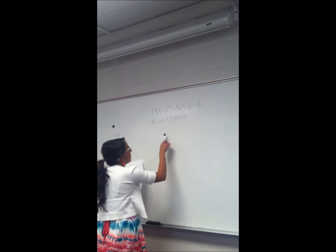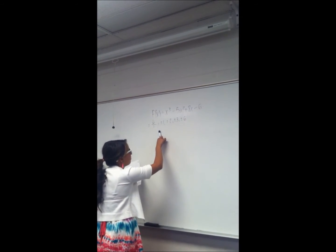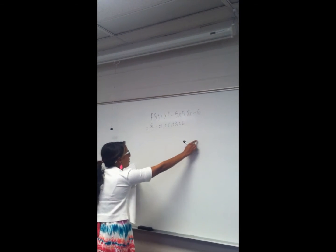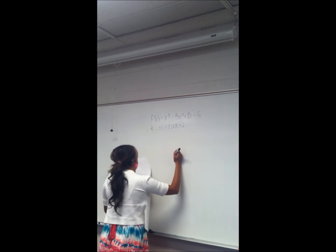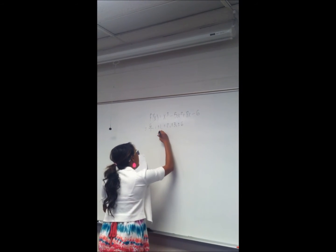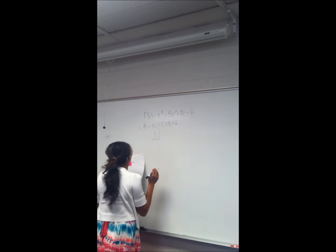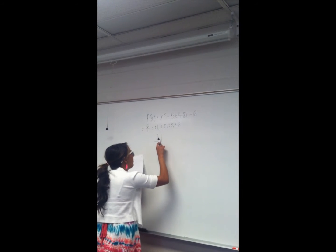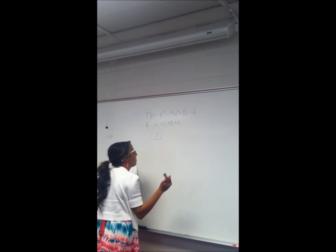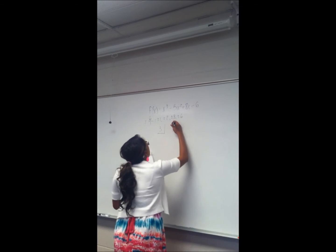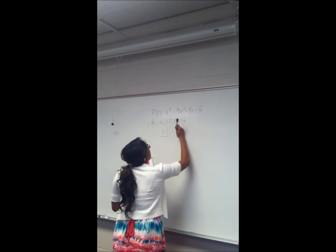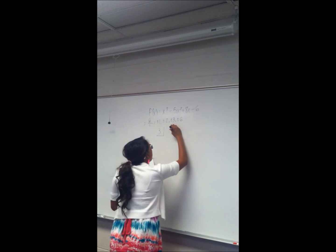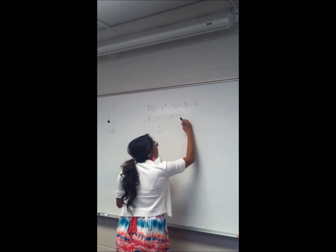From there, since we've limited our possible zeros and factors down to eight possible answers, this problem is going to be a lot easier. So now we try certain numbers. I started with three. What we do now is set the problem in synthetic division and divide by three to see if it is a factor of f of x. So using synthetic division, we take the coefficients of f of x and drop them down. So we have one,